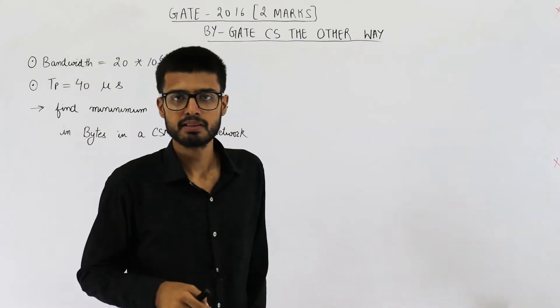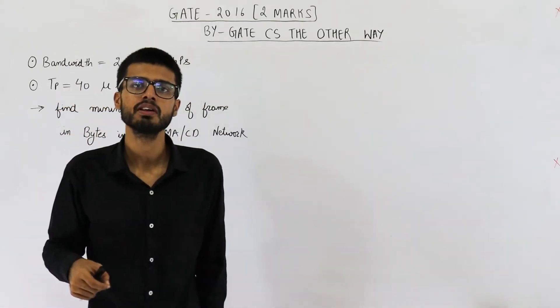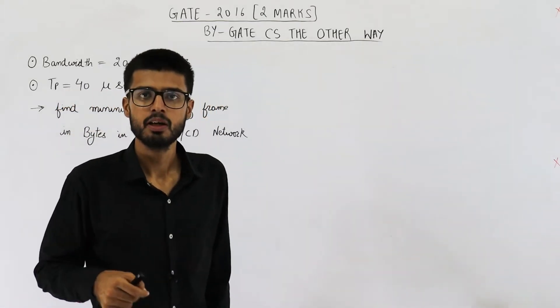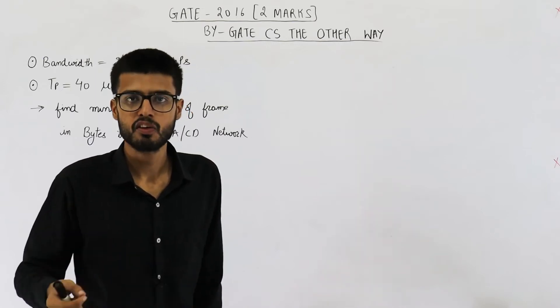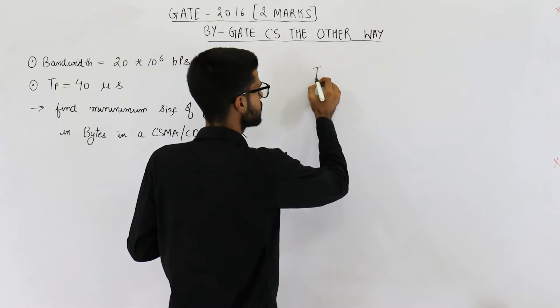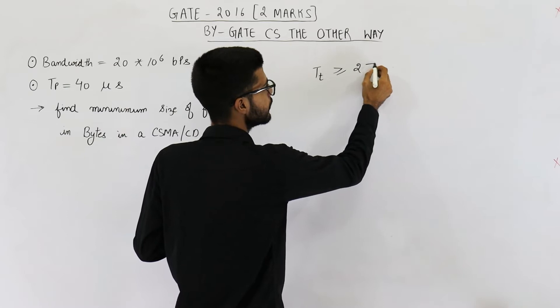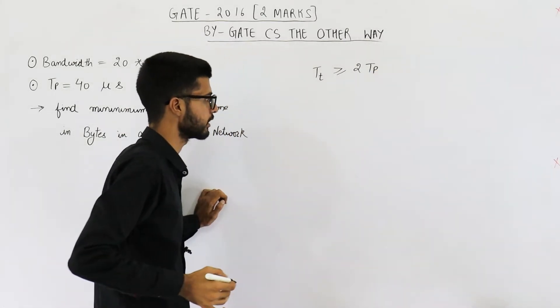Now in CSMA/CD networks for proper collision detection, we always want to keep on transmitting for at least twice the propagation delay. That means we want that the transmission time must be at least equal to or greater than twice the propagation delay.